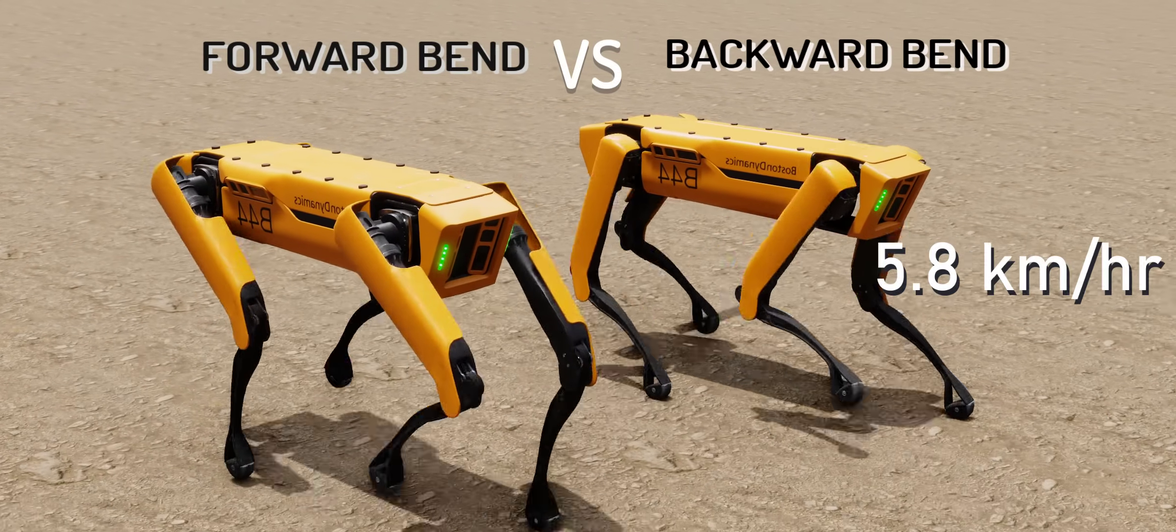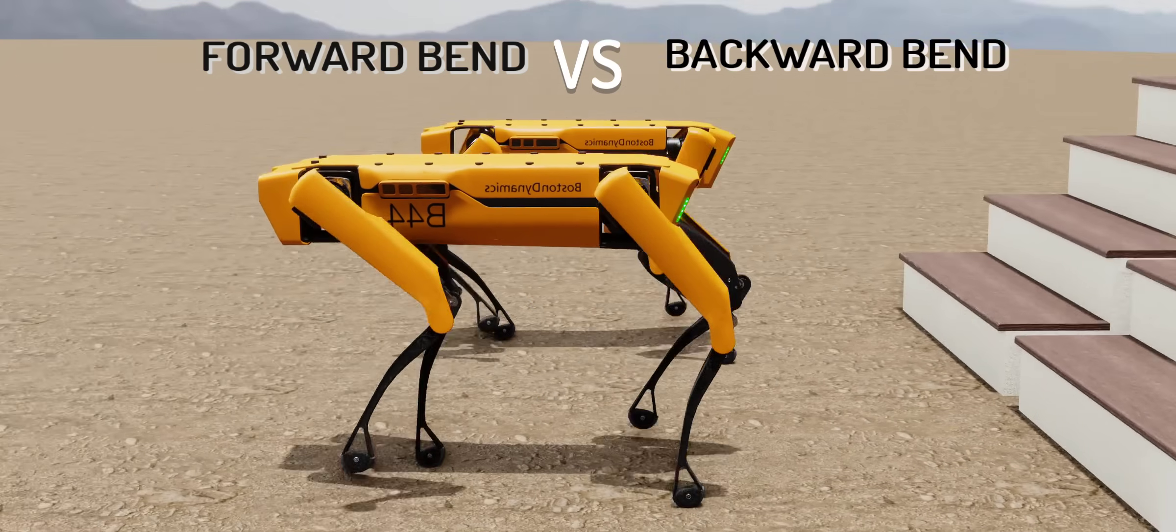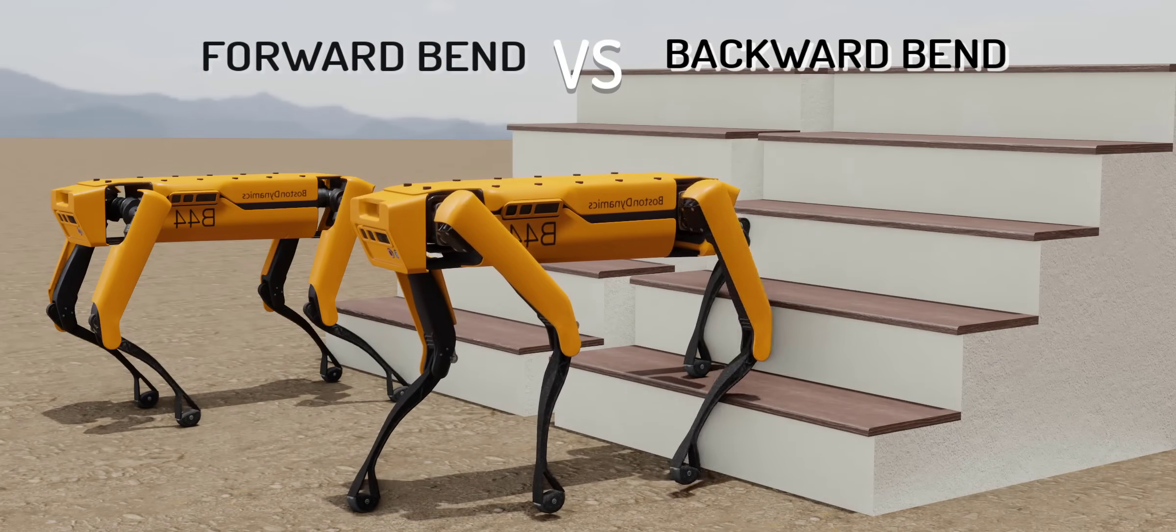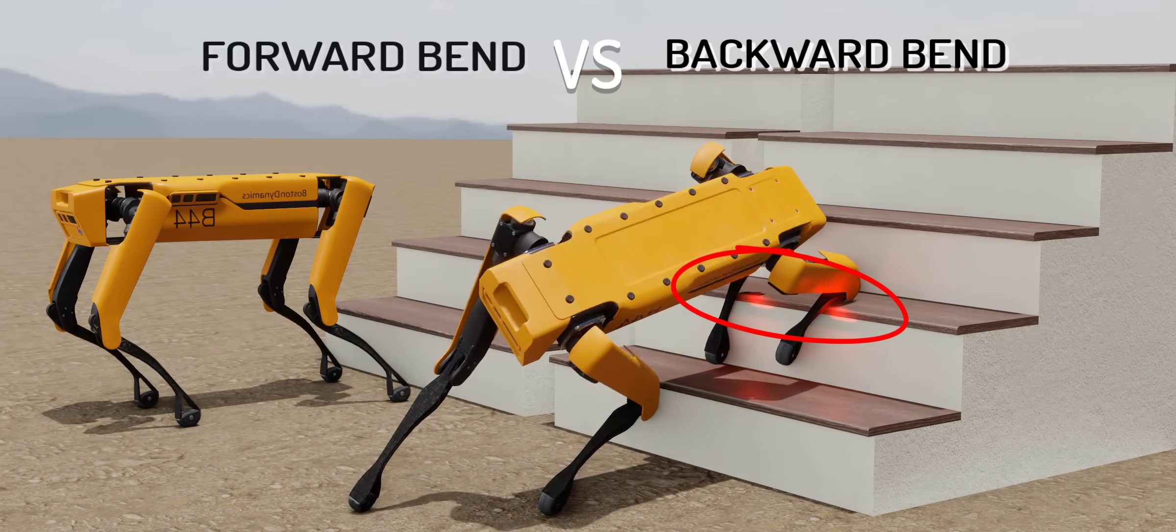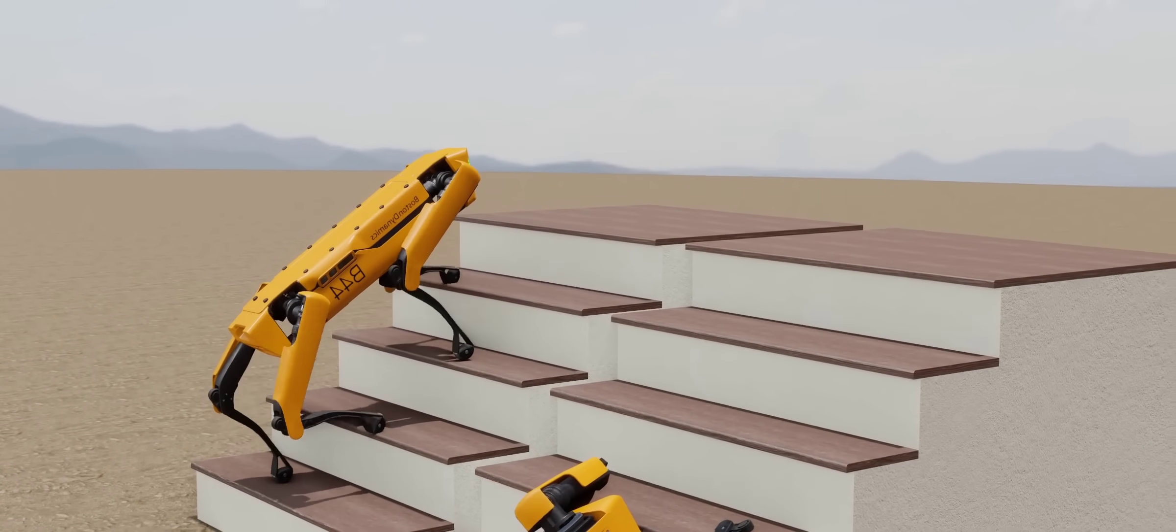The maximum speed both robots can achieve is almost the same, but what about this stair climbing challenge? This forward bend robot collides with the stairs, but the backward bend leg gives it a clear advantage, allowing it to climb over stairs.